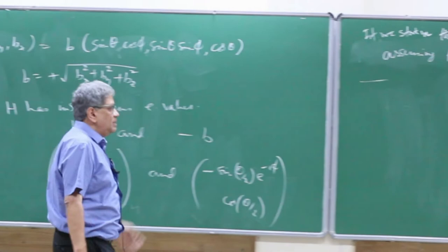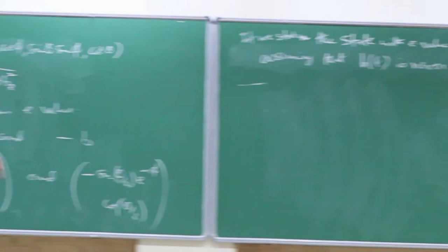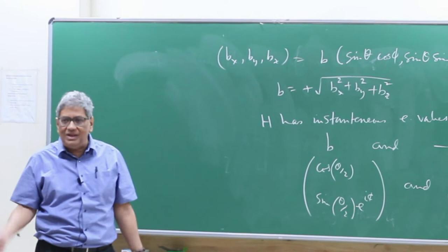We know the state stays with eigenvalue +b, but the important question is: what is the phase of the wave function? Because typically the phase also changes with time. Even for a time-independent Hamiltonian, the phase changes as e^{−iEt/ℏ}. So what is the analogous statement when the Hamiltonian is varying in time?